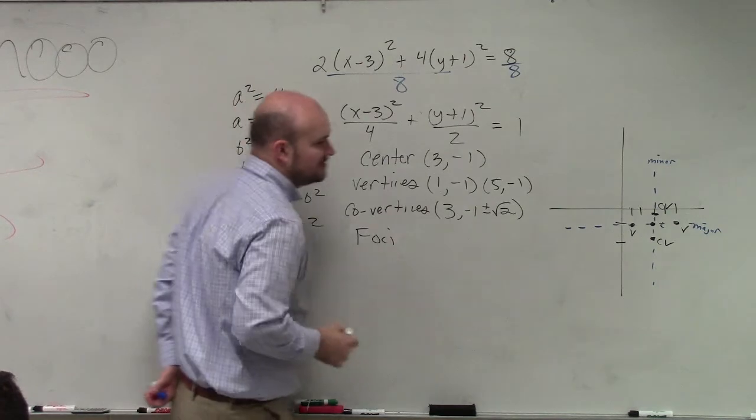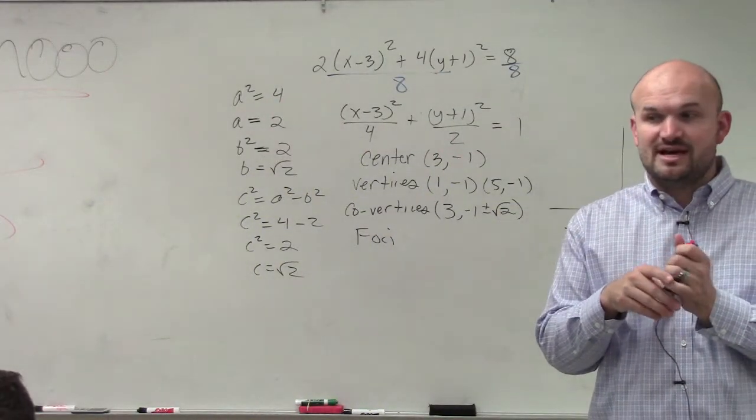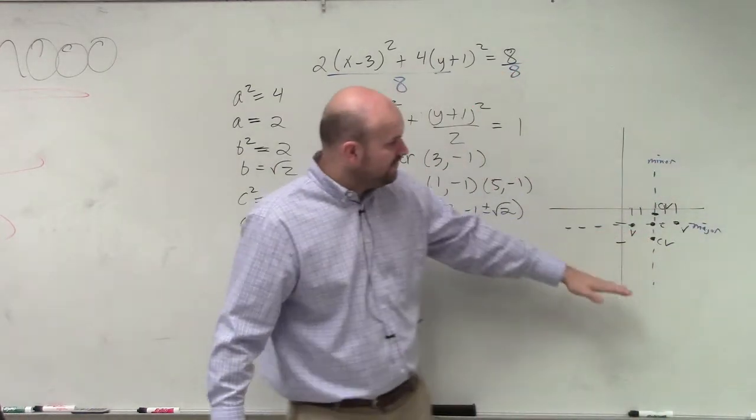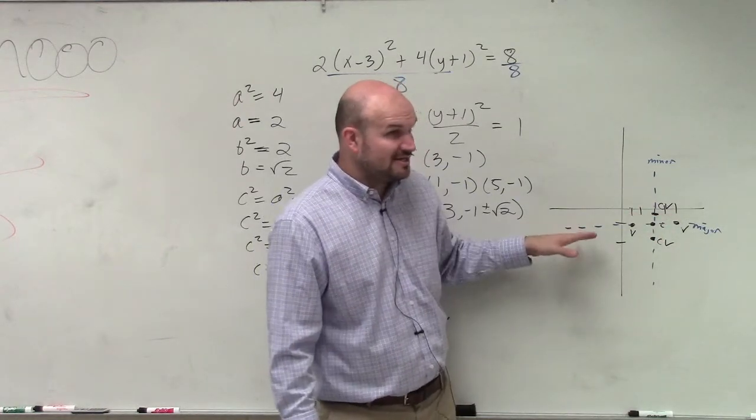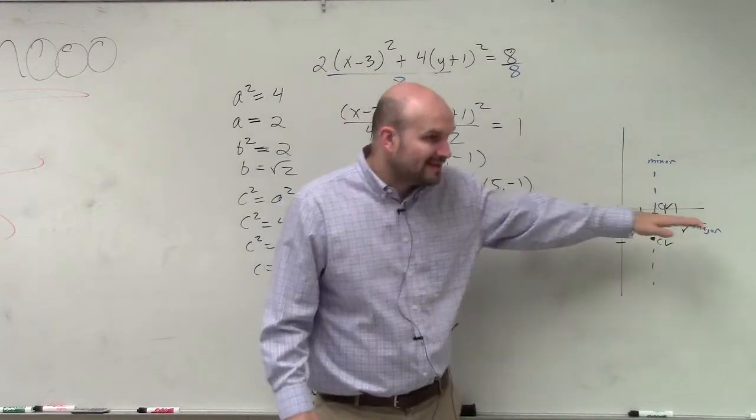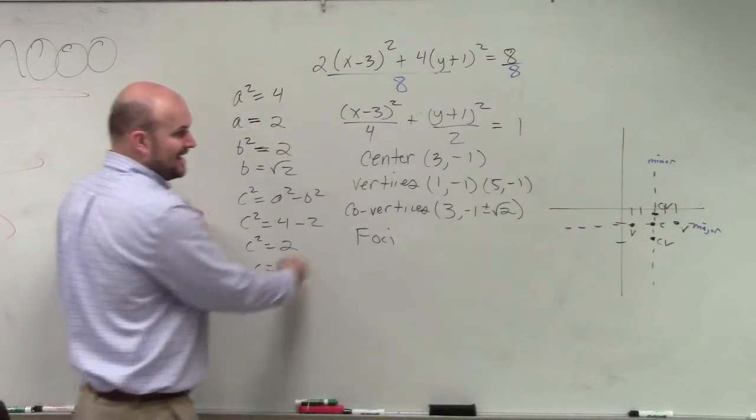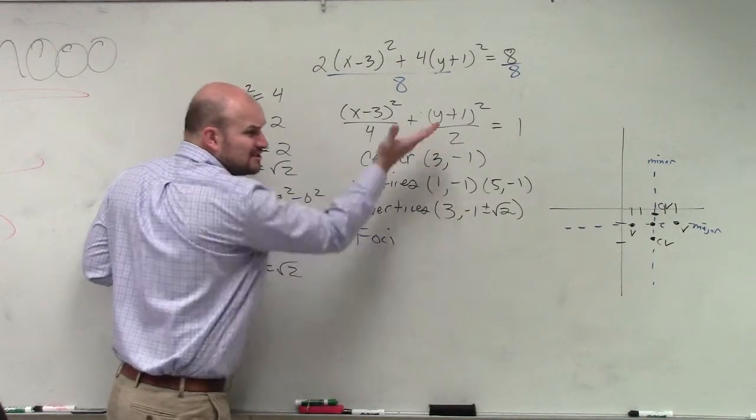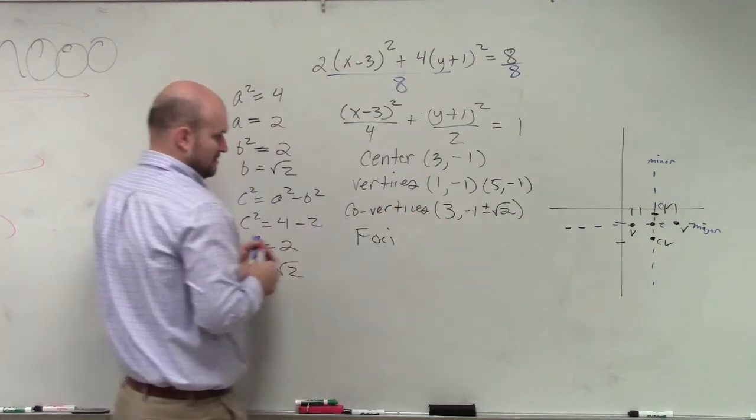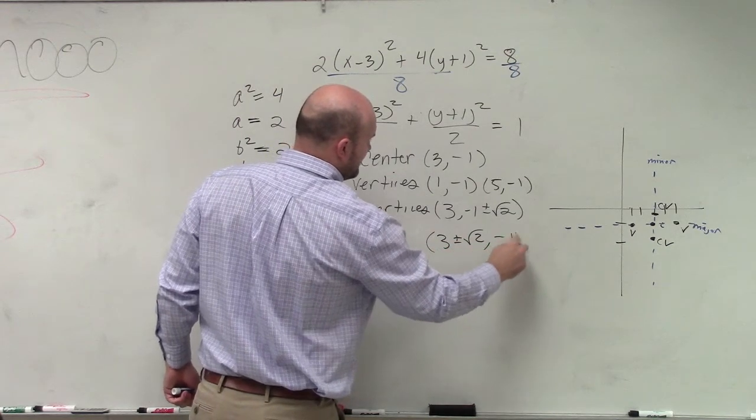And then last but not least, to identify the foci, it's, again, very, very important. The foci lie on the major axis. So if my co-vertices were going up or down, my vertices go left and right, my vertices are on the major axis. So that means my foci are on the major axis. That means I'm going left or right. So what should I add the square root of 2 to? Should I add it to the y-coordinate like I did for co-vertices? No, that was to go up or down. I need to add plus or minus square root of 2 to the x-coordinate. So it's 3 plus or minus the square root of 2, comma negative 1.